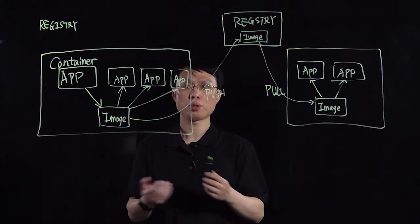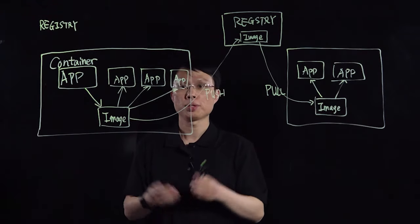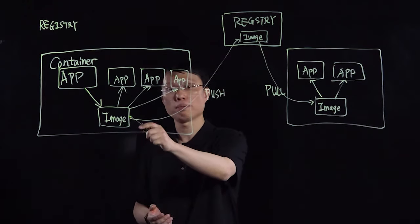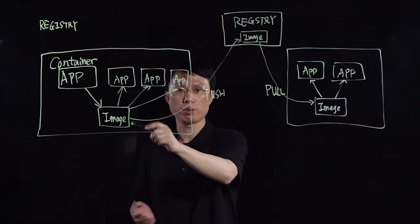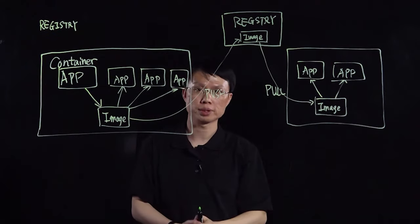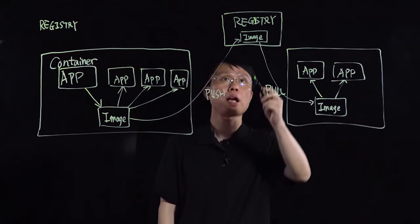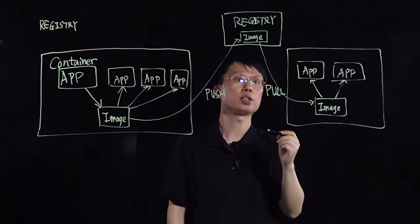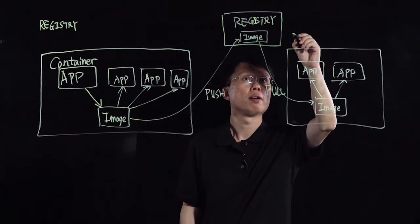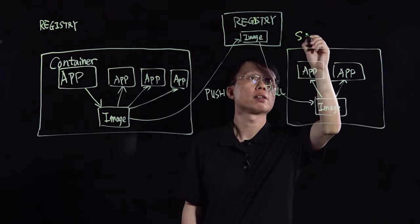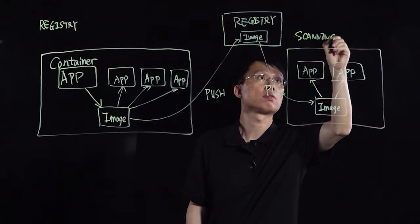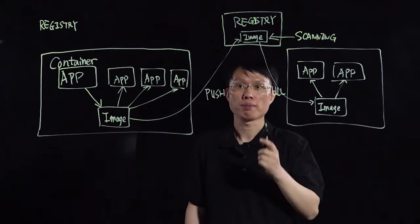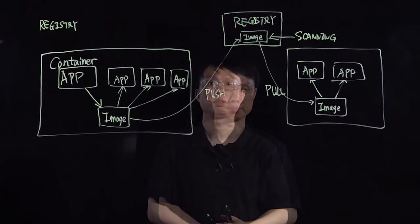There are also some important considerations behind this. First, your organization may be required to keep its IP or intellectual properties within the organization. Container images may contain very sensitive information that you don't want to put into a public registry service. Second, a private registry can prevent images with malware or vulnerabilities from getting into the organization. Moreover, you can perform regular scanning on the local image to find out any vulnerabilities and then apply patches accordingly.